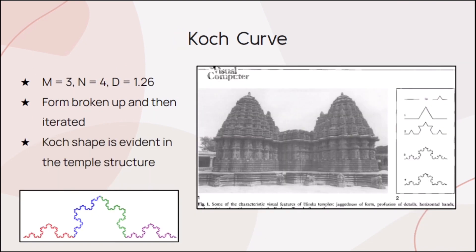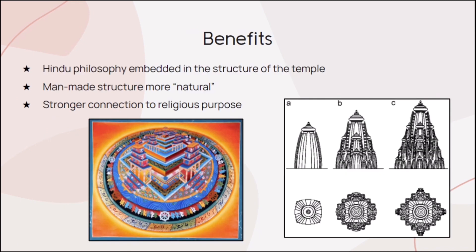The Koch curve is obtained by dividing a line into three parts, replacing the middle section with two or more segments of equal length, and then iterating it an infinite number of times. The rule for this curve is one of the architectural principles drawn from the Hindu cosmos. The main benefit of the fractal nature of the Hindu temple was that it brought the shape of the man-made structure closer to nature and closer to what the Hindus believed was the structure of the entire universe. They were a physical manifestation of the Hindu philosophy, connecting their physical appearance to their religious purpose.